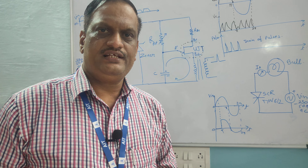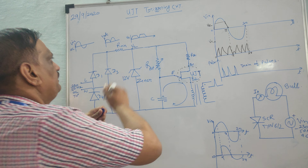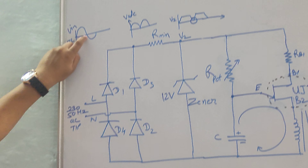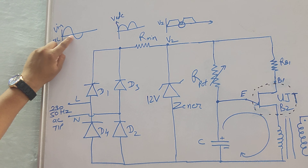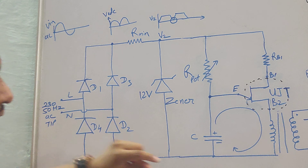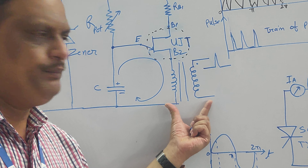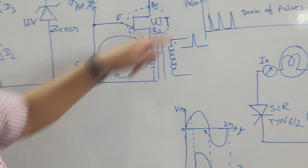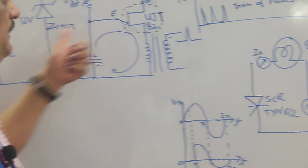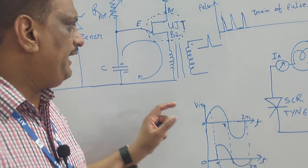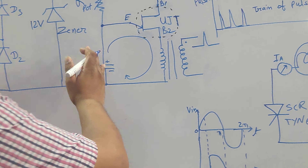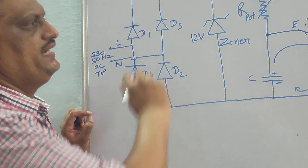Which is the point of synchronization? The point of synchronization is nothing but the zero crossing. Whenever my input voltage crosses zero, that point is called as the zero crossing. So this zero crossing is the point of synchronization. It is also providing the isolation between the high power circuit and the low power circuit — meaning if anything goes wrong in the high power circuit, that will not damage your low power circuit. That is why there is an isolation between the power circuit and the triggering circuit.